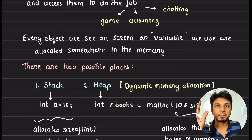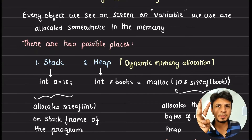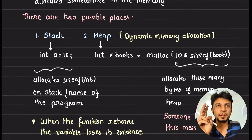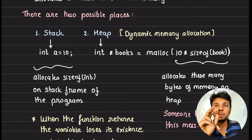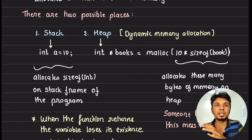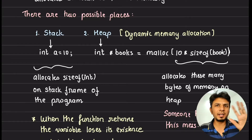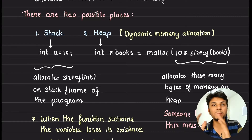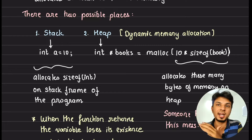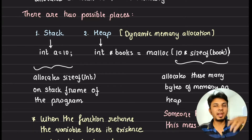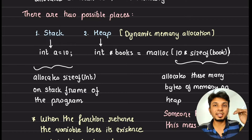Every variable we use is allocated somewhere in memory. There are two possible places: stack and heap. Heap is where the major part of garbage collection lies, because the stack is automatically garbage collected. So we'll spend a few minutes understanding the stack, then move into heap, because that's where the entire discussion is.